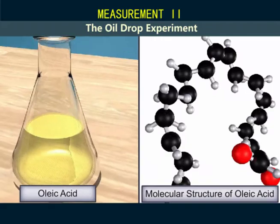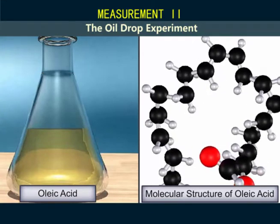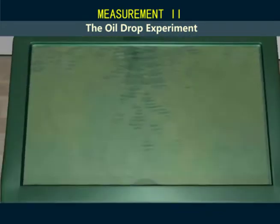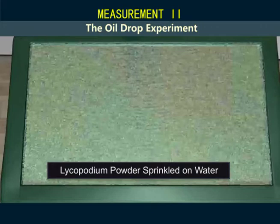We take some oleic acid which is a soapy liquid with large molecular size of 10 raised to power negative 9 meters or nanometer. We take water in a large trough and sprinkle some lycopodium powder on the surface. This is a greenish yellow powder that spreads uniformly throughout the surface of the water forming a thin layer.